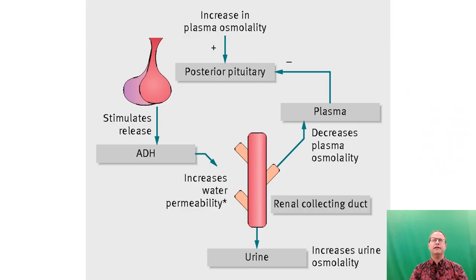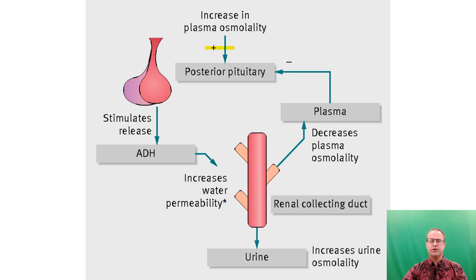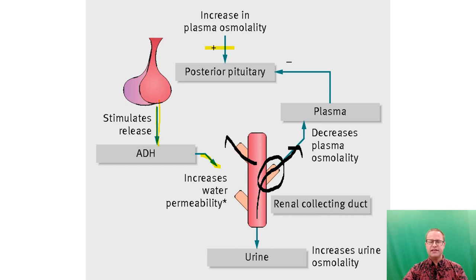Water balance is regulated by the hypothalamus, which generates the thirst reflex and controls anti-diuretic hormone (ADH). ADH is stored in the posterior pituitary and is released in response to increased plasma osmolality. As we become dehydrated and blood plasma becomes more salty, ADH travels to the collecting ducts of the kidneys and inserts aquaporins — water channels that allow more water to be reabsorbed back into the bloodstream. This produces less urine that is more concentrated, and all that water rejoins the blood volume.